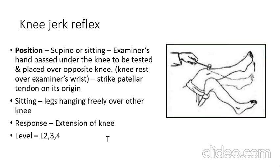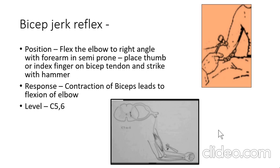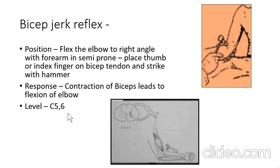For the bicep jerk, flex the elbow to a right angle with the forearm in semi-prone position. Place the thumb or index finger on the bicep tendon and strike it with the hammer. Biceps contraction occurs, leading to flexion of the elbow. The level is C5-C6.